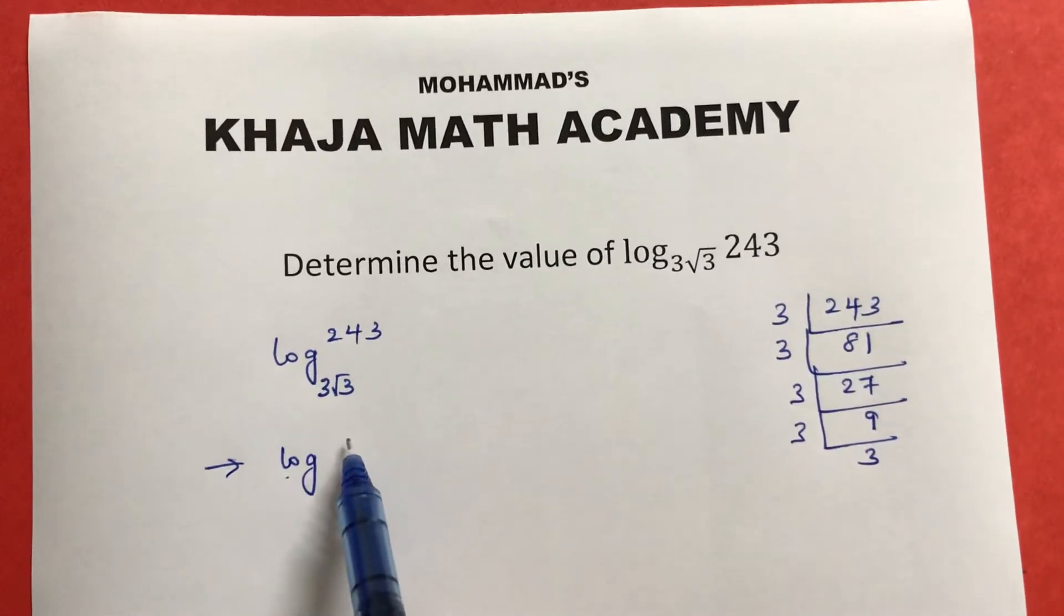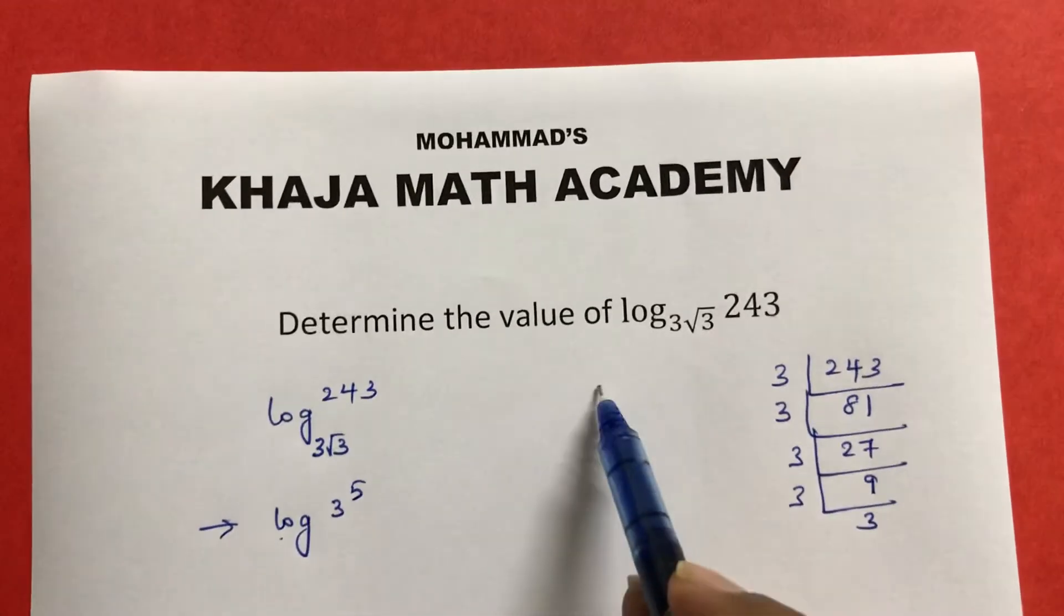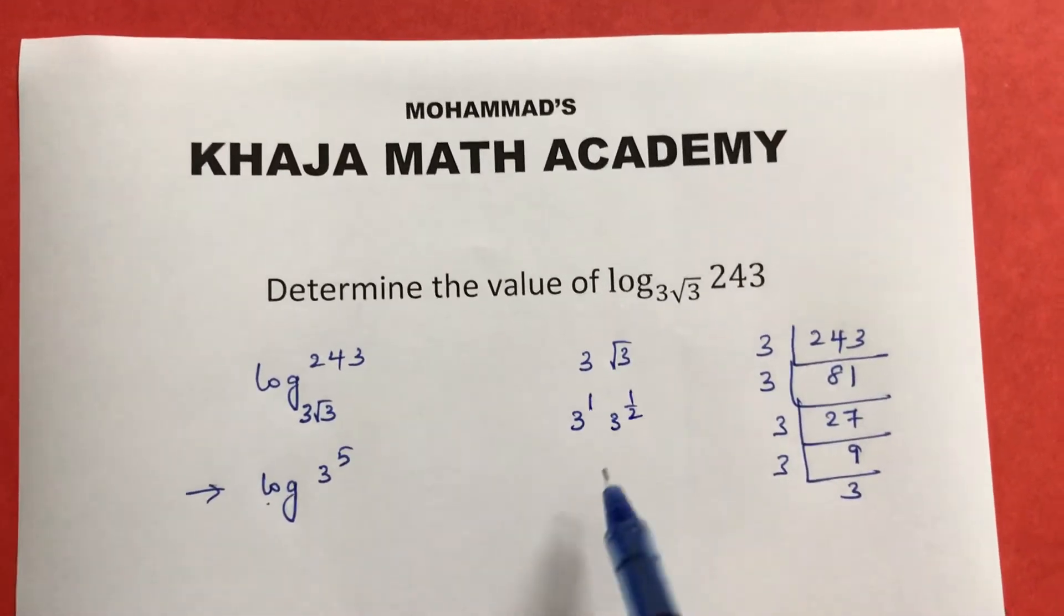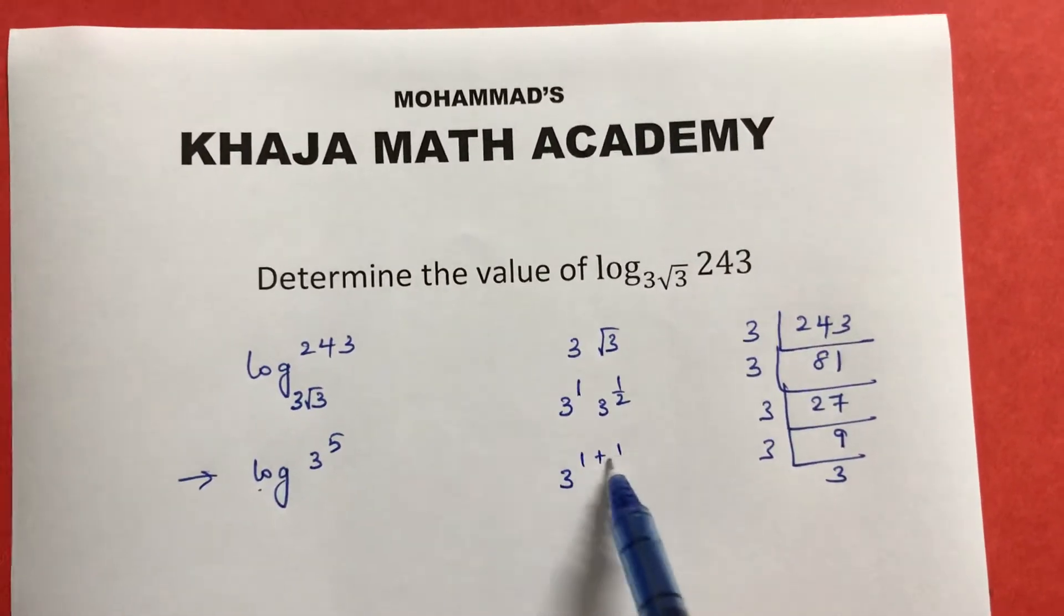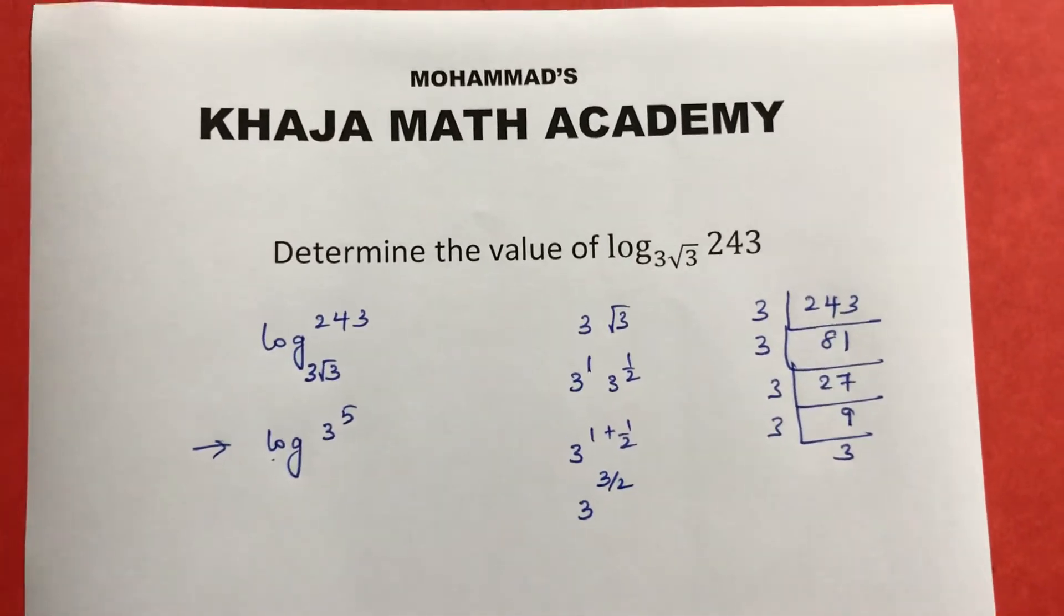243 can be written as 3 power 5. And 3 root 3 can be written as 3 power 1 times 3 power 1/2, which is 3 power (1 + 1/2), giving 3 power 3/2.